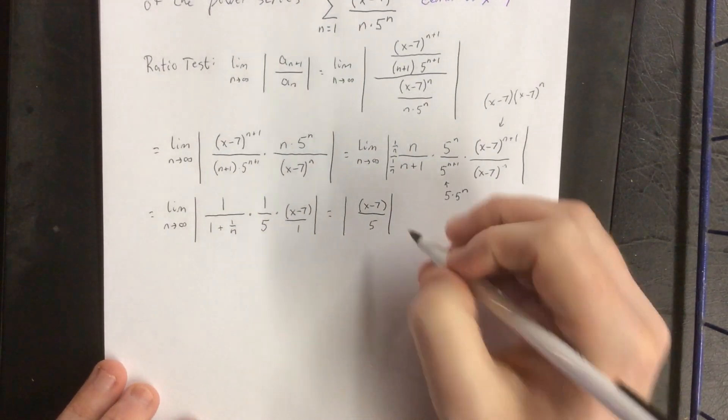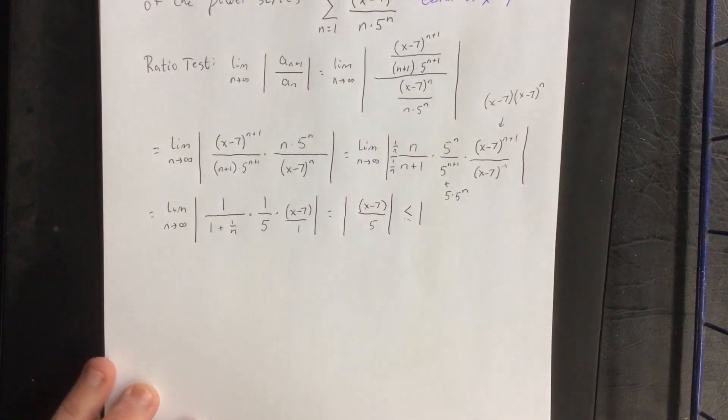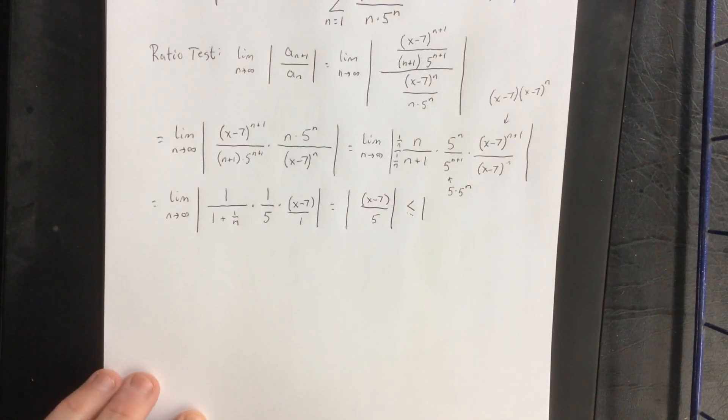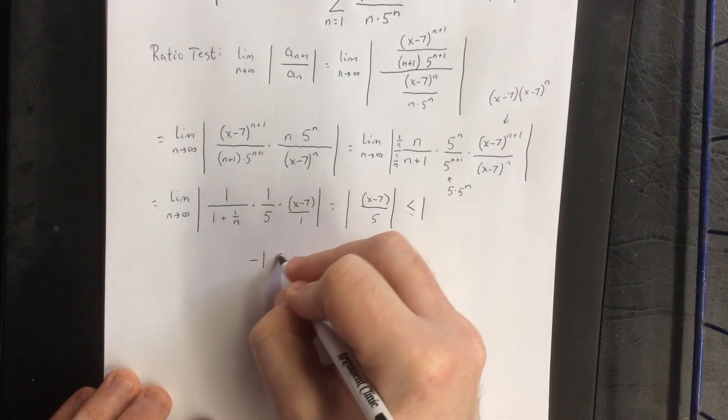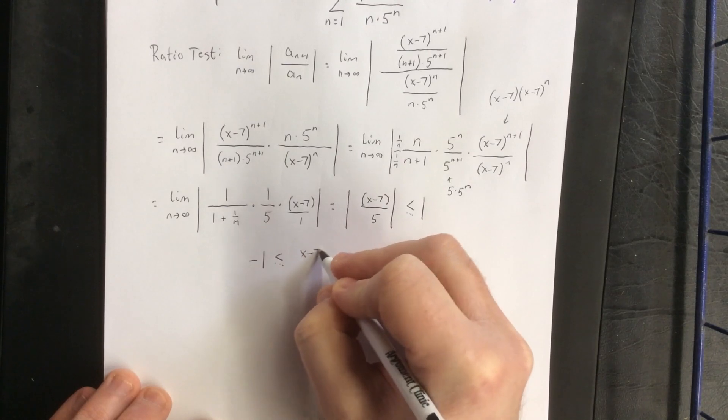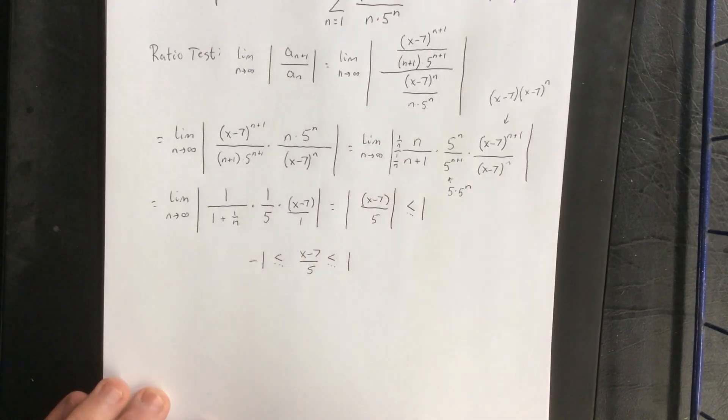Now according to the ratio test, as long as this is less than or equal to 1, this will converge. This allows us to set up the following compound inequality: negative 1 is less than or equal to x minus 7 over 5, which is less than or equal to positive 1.